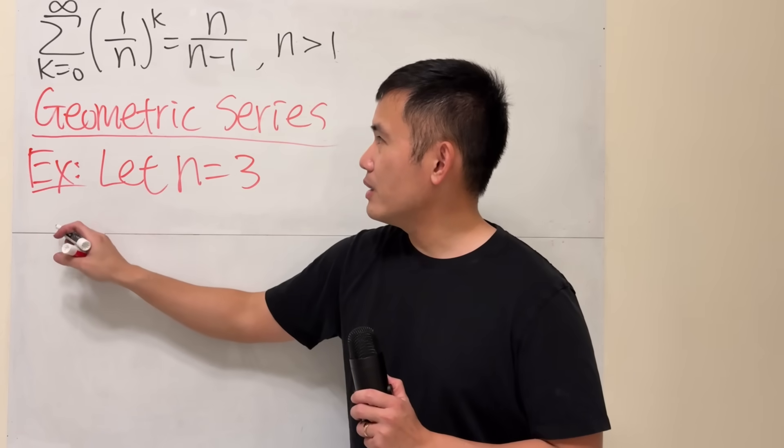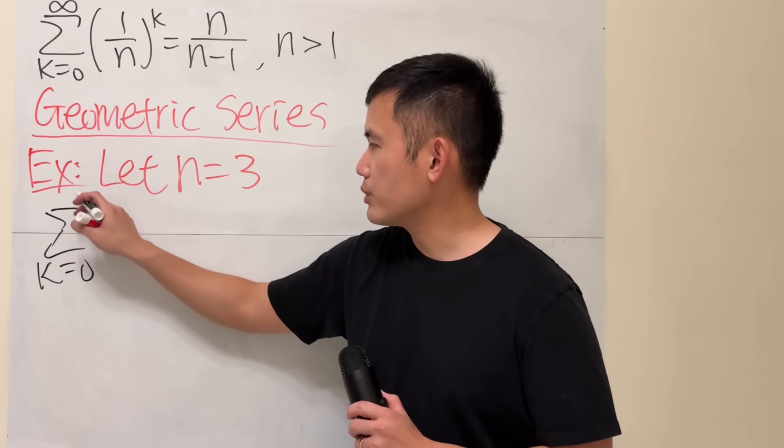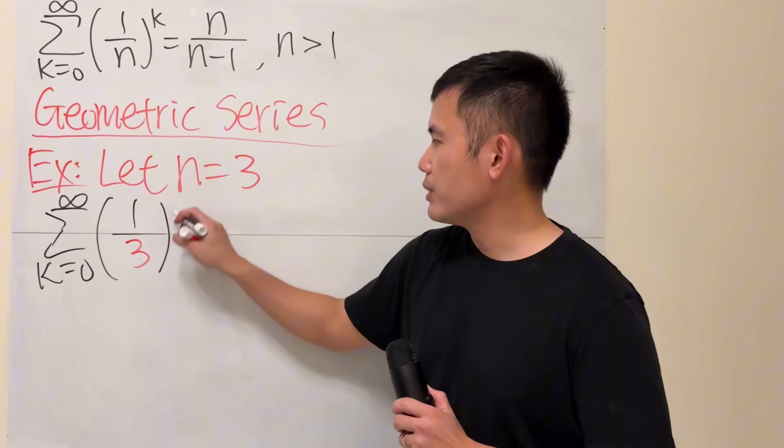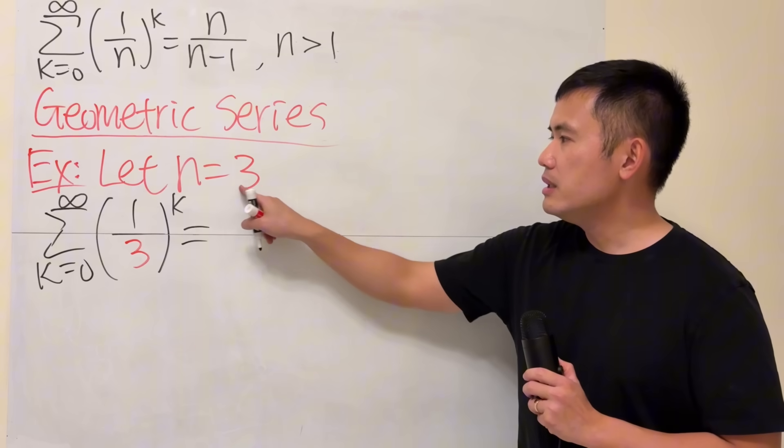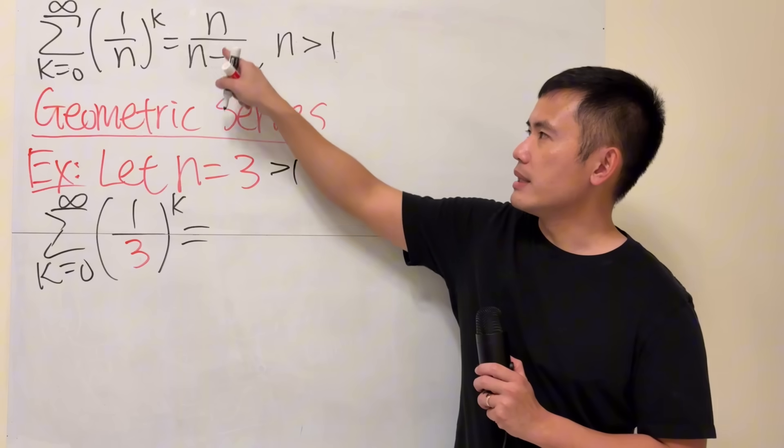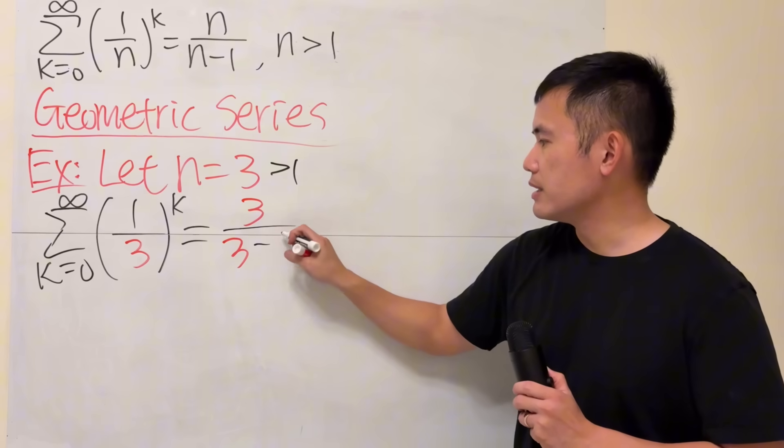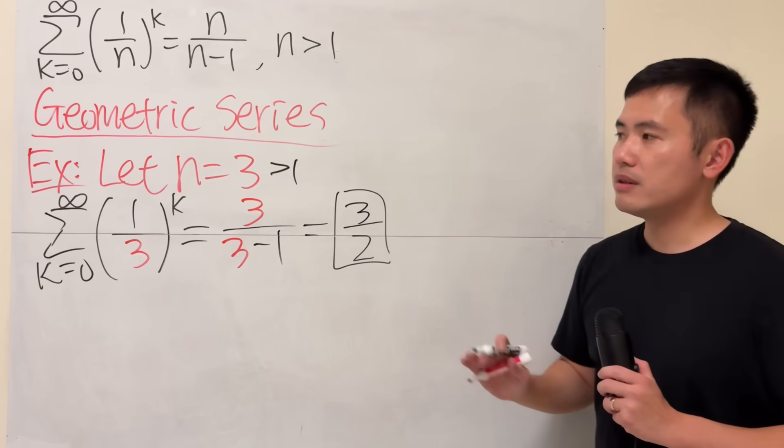let n be equal to 3. So this right here, we are going to get a summation as k goes from 0 to infinity. And we will have 1 over 3 to the k's power. Now, because n is 3, which is greater than 1, so we can put that in here. So it gets 3 over 3 minus 1, which we get 3 over 2 for the answer. Done.